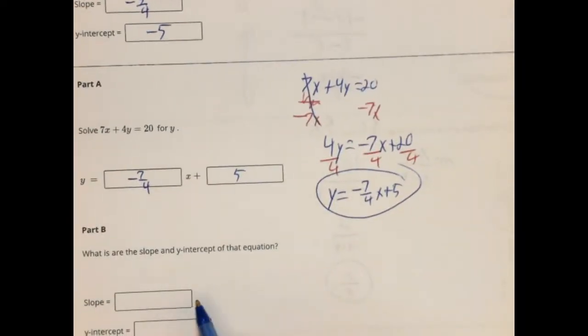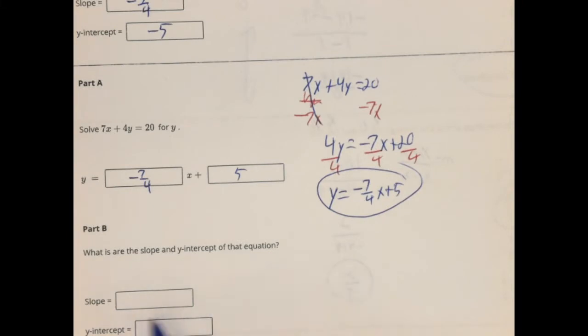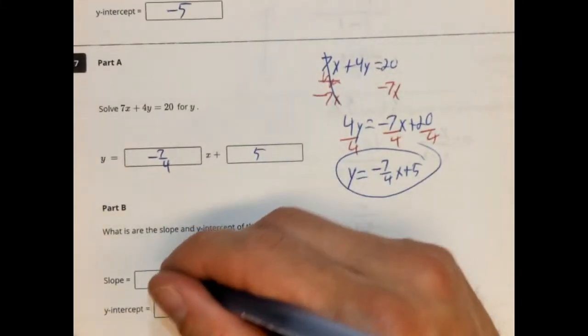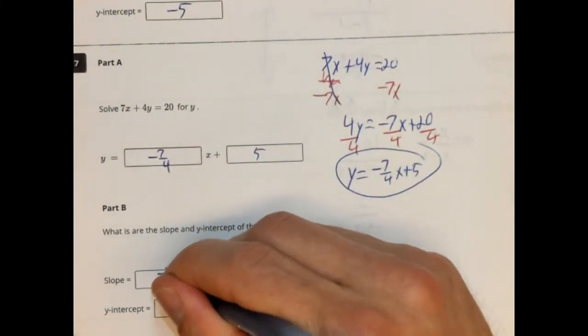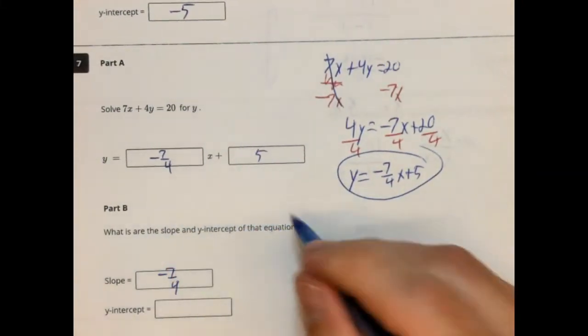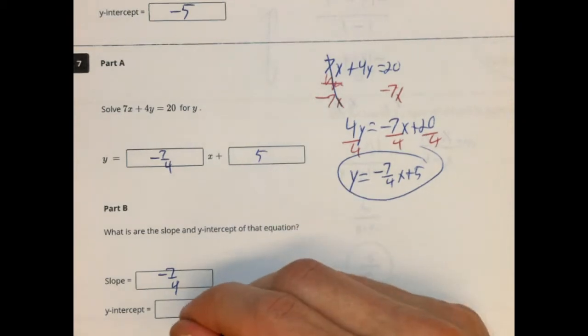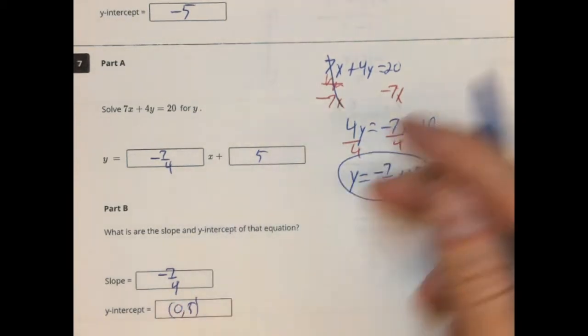What is the slope and y-intercept? Well, the slope is going to be our rate of change, which is negative 7 fourths. And our y-intercept is 5 — or (0, 5).